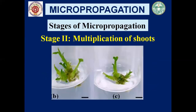In this picture we can clearly see there are multiple shoots — one, two, three, four, five — so many shoots have formed. If you cut one of the shoots in a laminar airflow and subculture it into another nutrient medium, it will grow into a plantlet. Like this, from a single explant or a single cell, you can get multiple shoots through micropropagation.